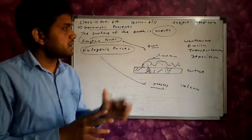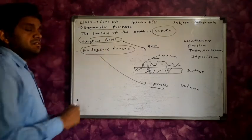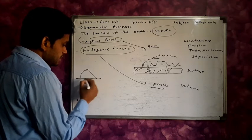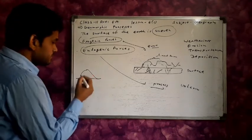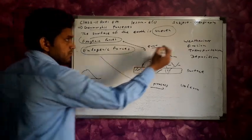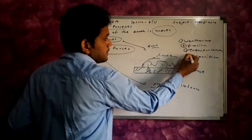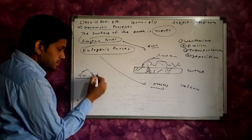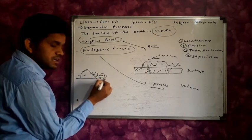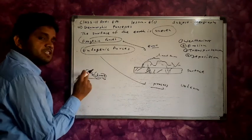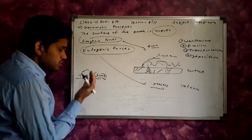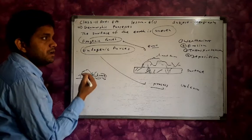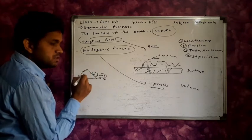For example, consider a mountainous region. The first exogenic process is weathering — the mountainous region starts to break in its own place. When mountains break at their own place, that process is known as weathering. This process is known as weathering.